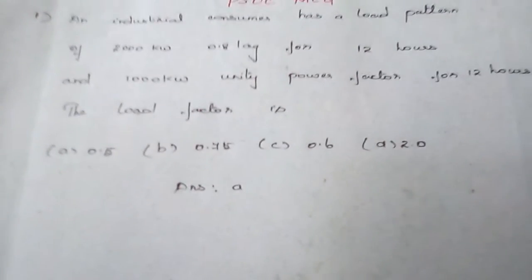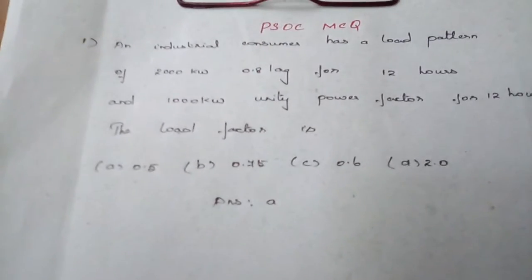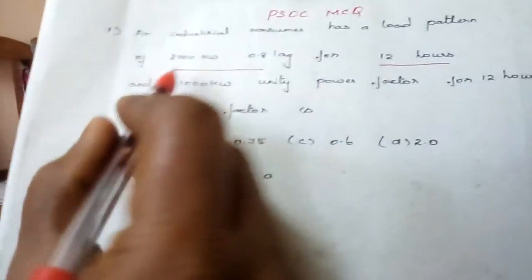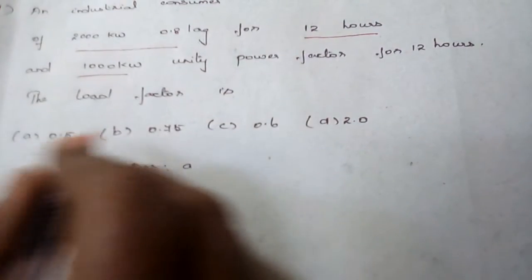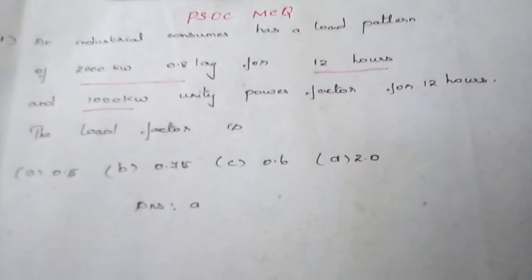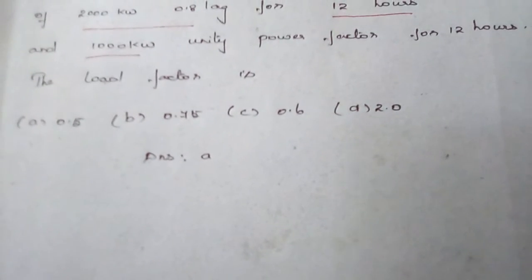Question number one: an industrial consumer has a load pattern of 2000 kilowatt at 0.8 power factor for 12 hours, and 1000 kilowatt at unity power factor for 12 hours. We are supposed to find out the load factor. We have already discussed the formulas and some MCQs on load factor, and now we discuss some more MCQs in power system operation.